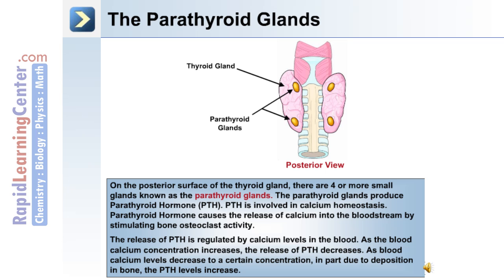The parathyroid glands produce parathyroid hormone, or PTH, which is involved in calcium homeostasis. PTH causes the release of calcium into the bloodstream by stimulating bone osteoclast activity. The release of PTH is regulated by calcium levels in the blood — as blood calcium concentration increases, PTH release decreases, and as blood calcium levels decrease, PTH levels will increase.